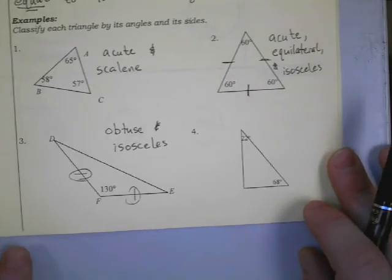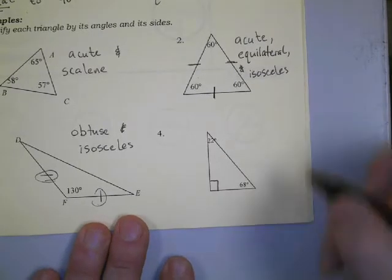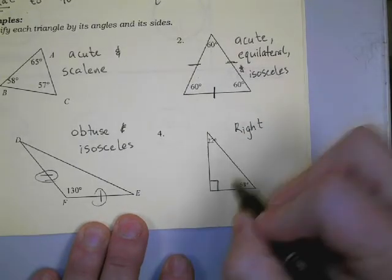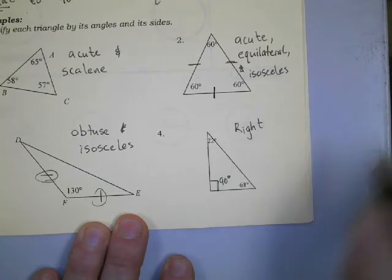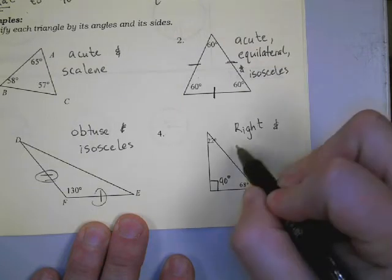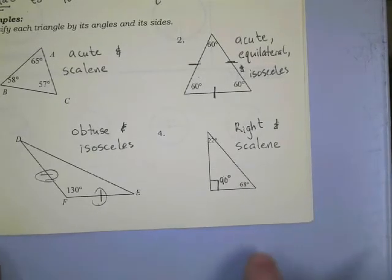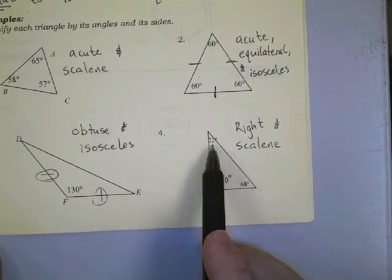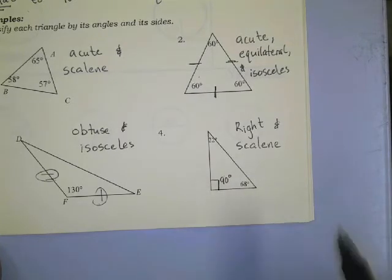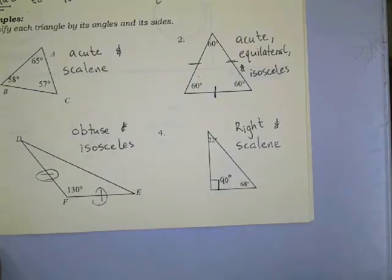In our next triangle, this angle happens to equal 90 degrees, so we know it's a right triangle. And since all my angles are different, it's right and scalene. Now you might wonder how I knew that was a right angle — that leads us into the triangle sum theorem, where if I add up all three angles, they will equal 180 degrees.